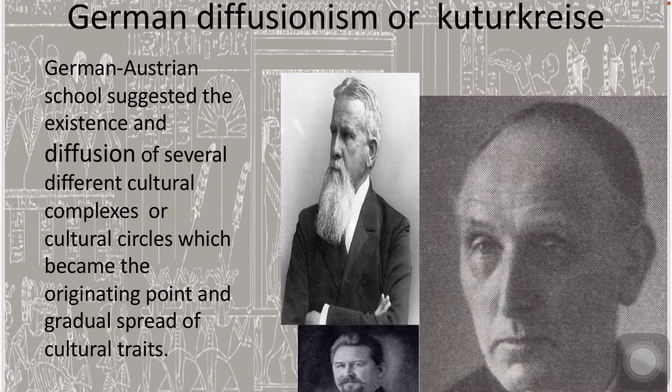Unfortunately, like the British Diffusionists, the German school provided little documentation for the historical relationships it assumed. In explaining why some primitive societies did not have the characteristics of civilization, the German school, like the British Diffusionists, argued that these people had simply degenerated. Thus, Diffusionist views, like the unilinear evolutionary views, represent ethnocentric perspectives of human societies outside the mainstream of Western civilization.